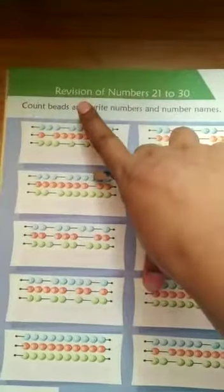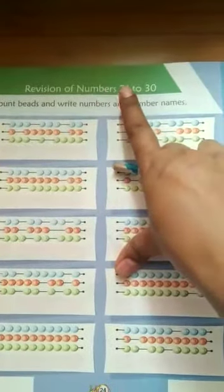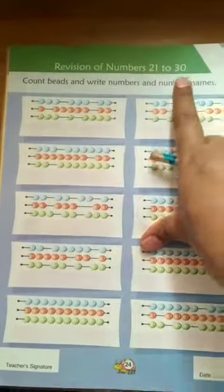Good morning children. You have learned numbers 1 to 40, and here I am showing you revision of numbers 21 to 30.